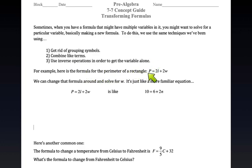So here's an example: here's the formula for the perimeter of a rectangle. P, capital P for perimeter, equals 2 times L plus 2W. What do L and W stand for? That's the length and the width. The perimeter equals two times the length plus two times the width.